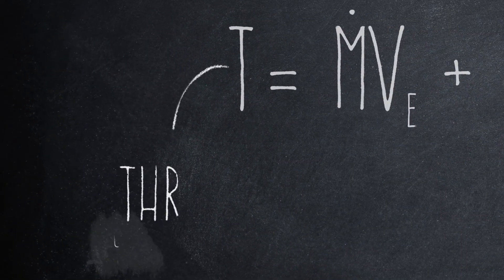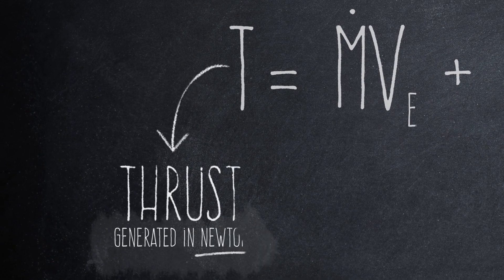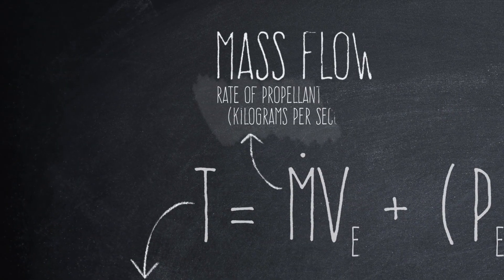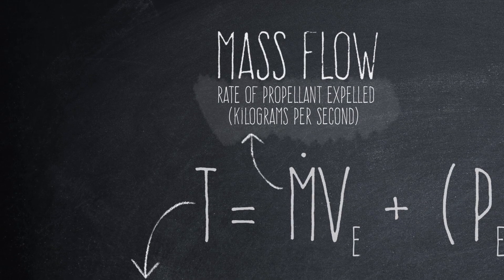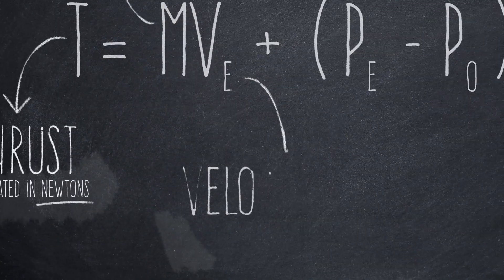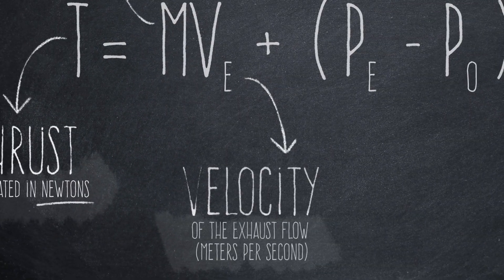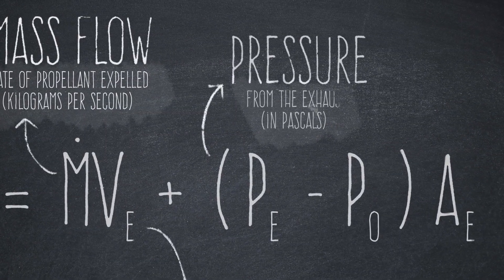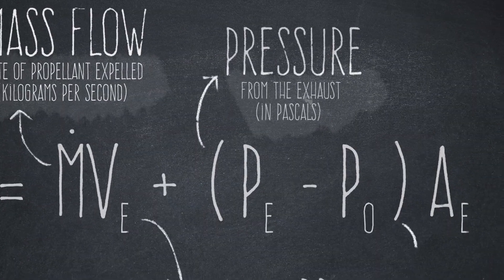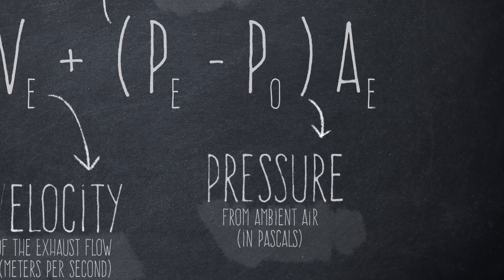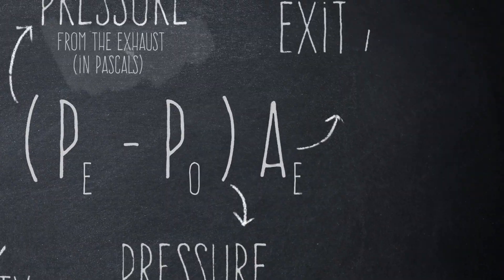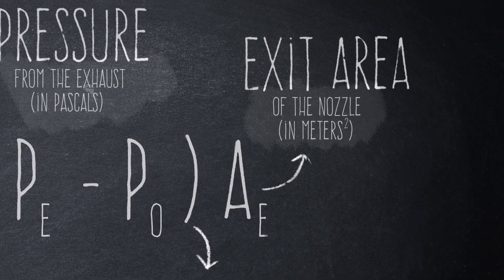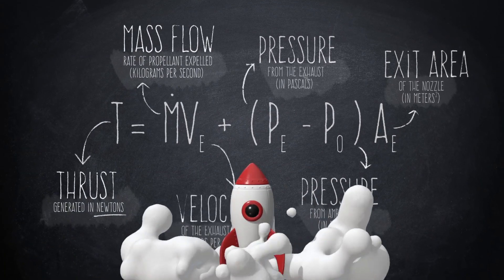Where T is the thrust generated in newtons. M is the mass flow rate of propellant expelled from the nozzle in kilograms per second. VE is the velocity of the exhaust flow in meters per second. PE is the exhaust pressure in pascals. PO is the ambient air pressure, also in pascals. And AE is the exit area of the nozzle in square meters.